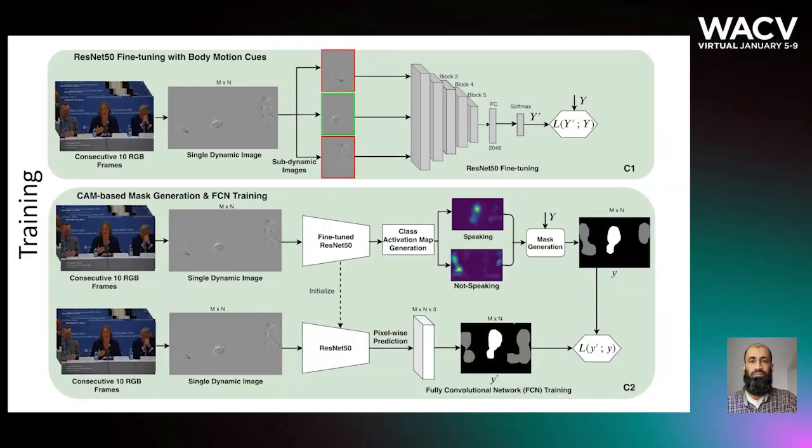In training, we adopt dynamic image representation, which summarizes the short-term spatial-temporal content of a video segment. One dynamic image is obtained from 10 consecutive RGB frames without overlapping. The resulting image is then cropped into sub-dynamic images, each containing a single subject.